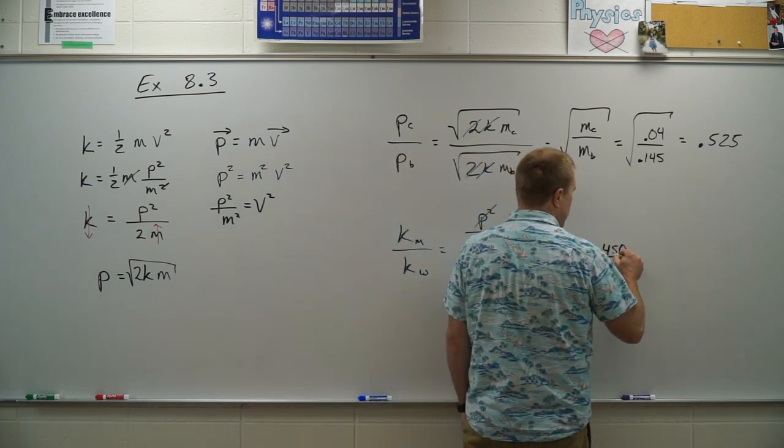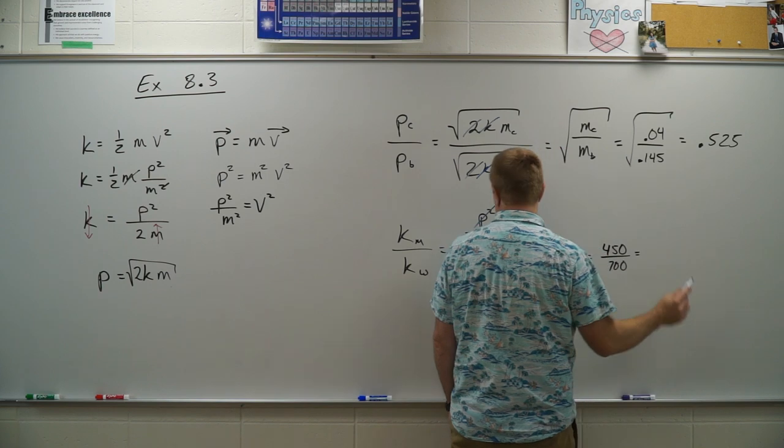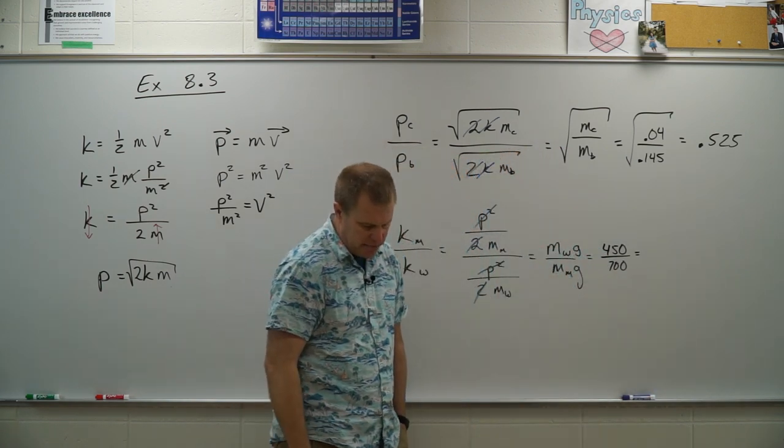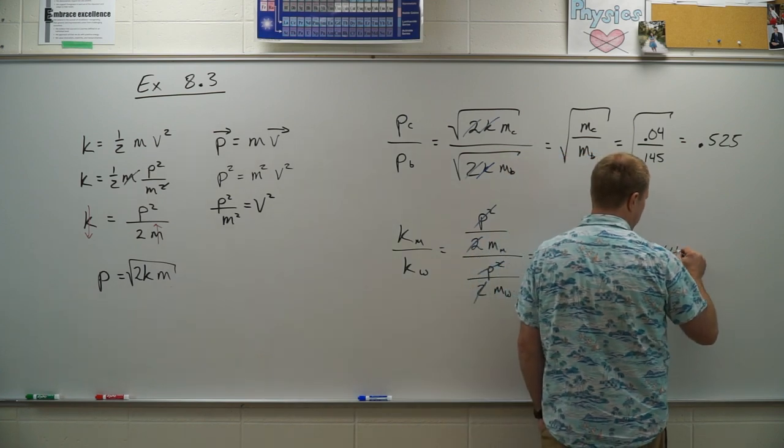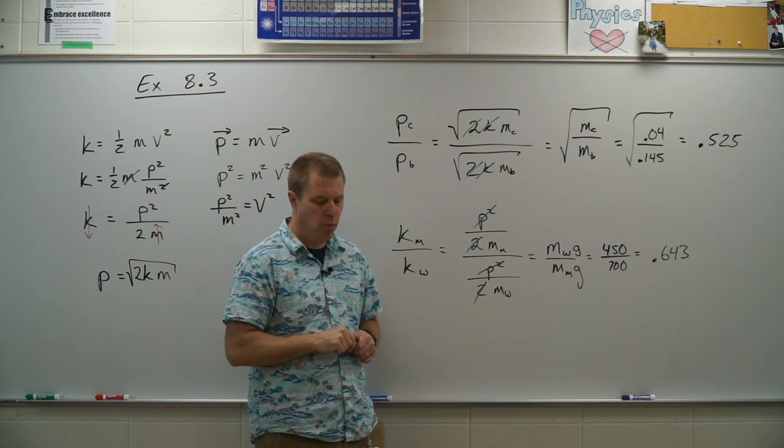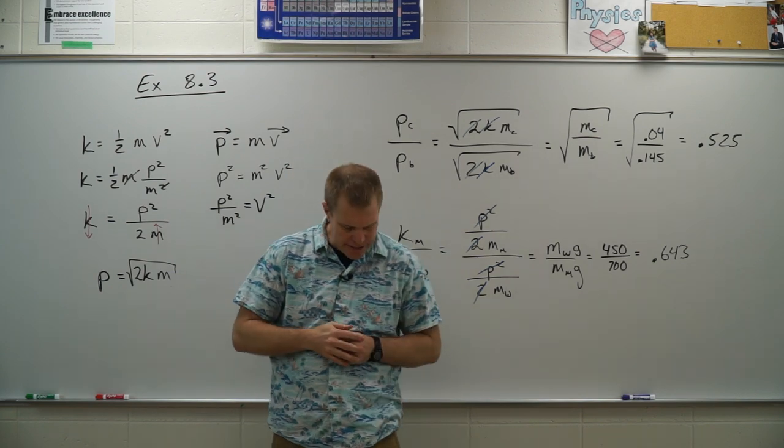So then I have 450 divided by 700, meaning the kinetic energy of the man is whatever that comes out to be, 0.643, the kinetic energy of the woman. And was there a D here? Nope.